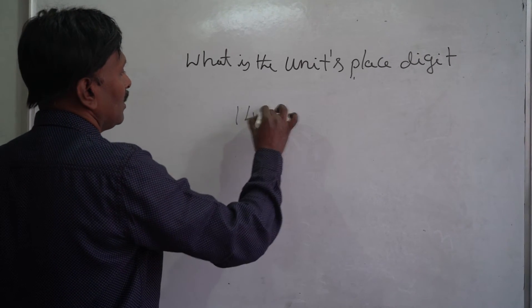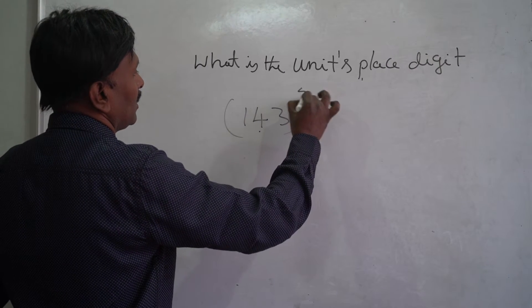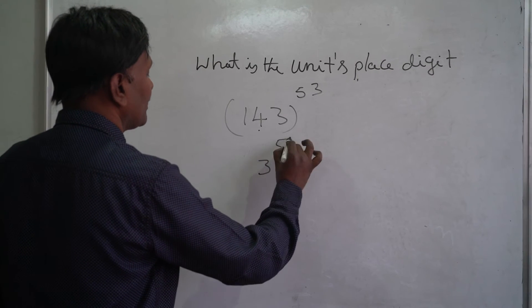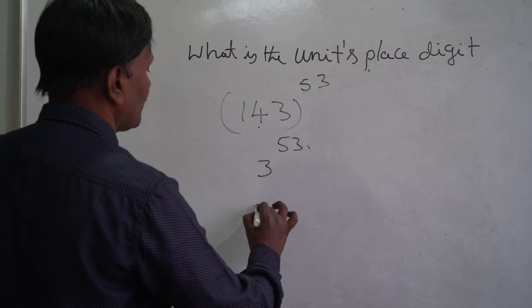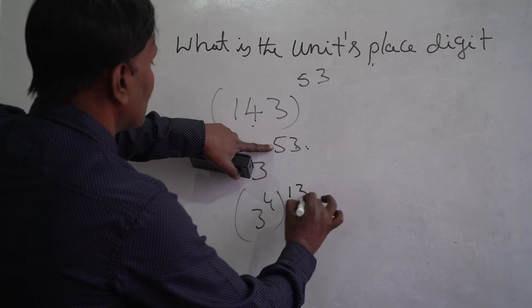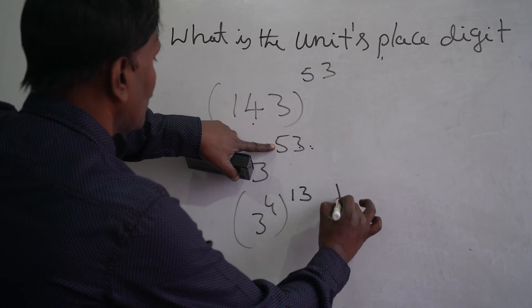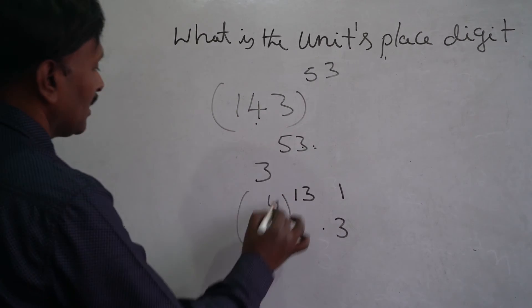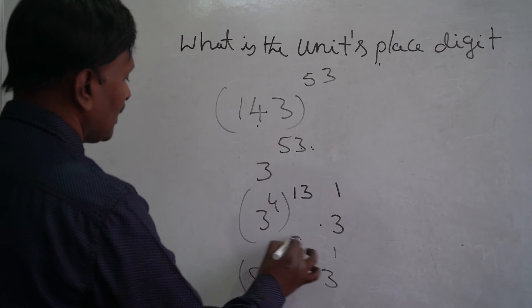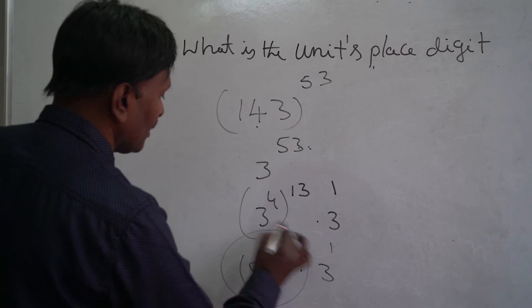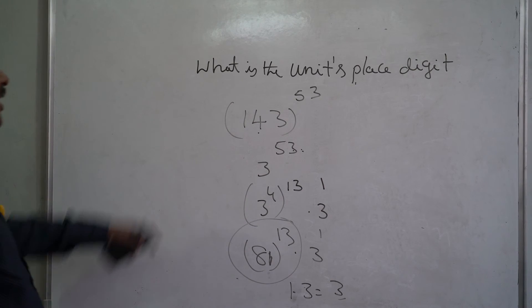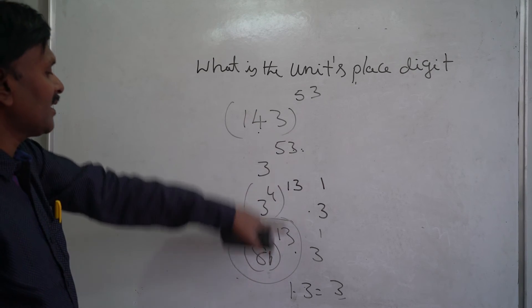One more example. For 143 to the power of 53, we look at 3 to the power of 53. Divide 53 by 4: 4 times 13 is 52, so remainder is 1 — giving us 3 to the power of 1 remaining. We have 81 whole to the power of 13, and 3 to the power of 1. The units place digit is 1 times 3, which is 3. So the units place digit of 143 to the power of 53 is 3.